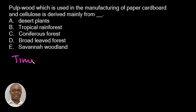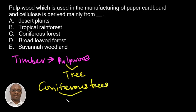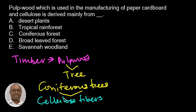The timber resources that are used to make wood pulp are referred to as pulp wood. While in theory any tree can be used for pulp making, the coniferous trees are preferred because the cellulose fibers in the pulp of these species are longer and therefore make strong paper.